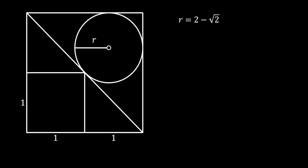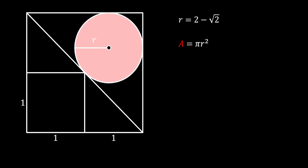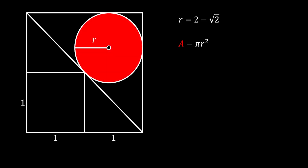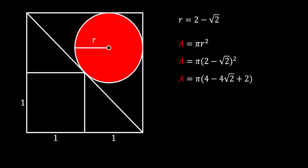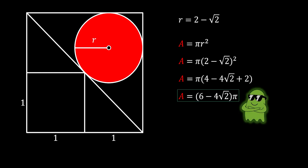Now we find the area of the red circle as pi r squared. Substituting the value of r and expanding using the square of a binomial, we get that the area of the red circle is equal to (6 minus 4 square root of 2) times pi — the same solution as before.